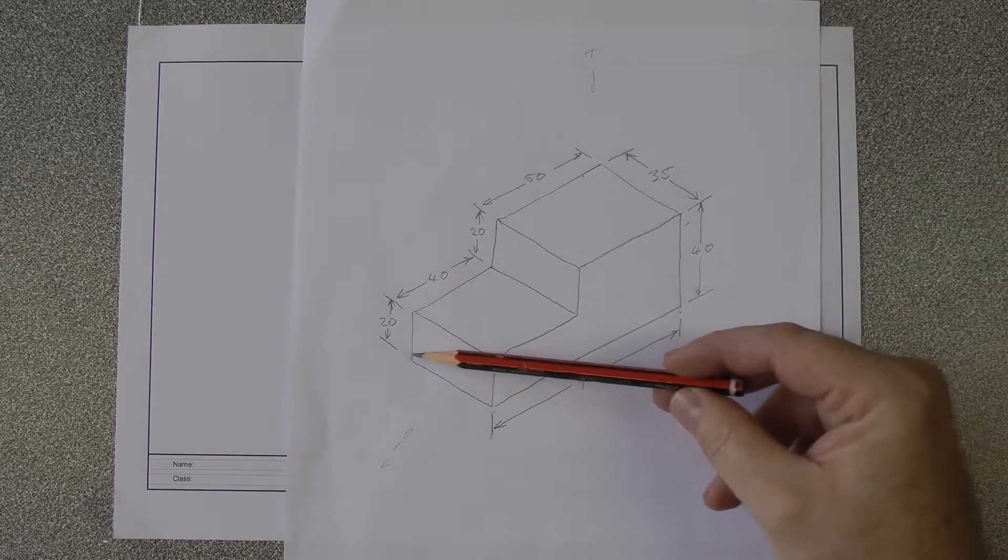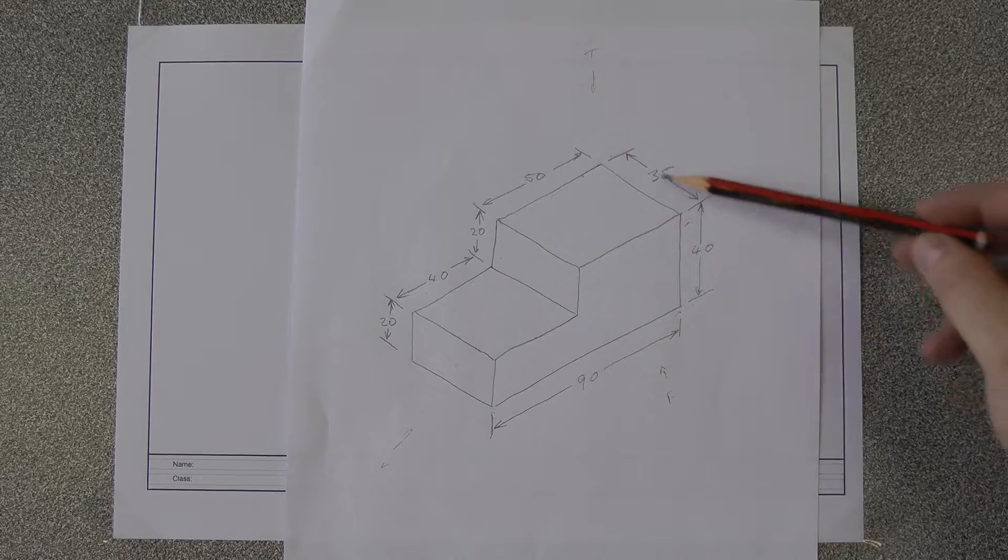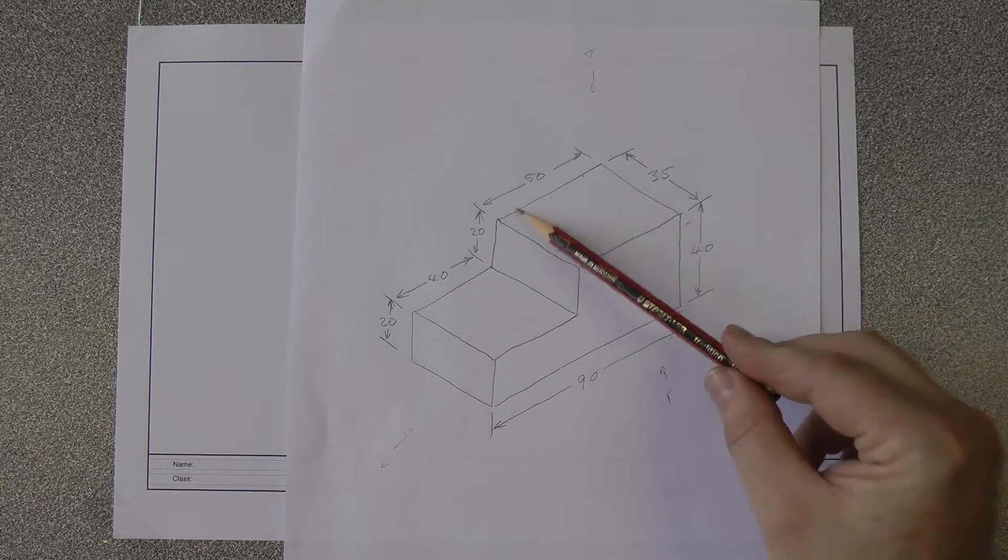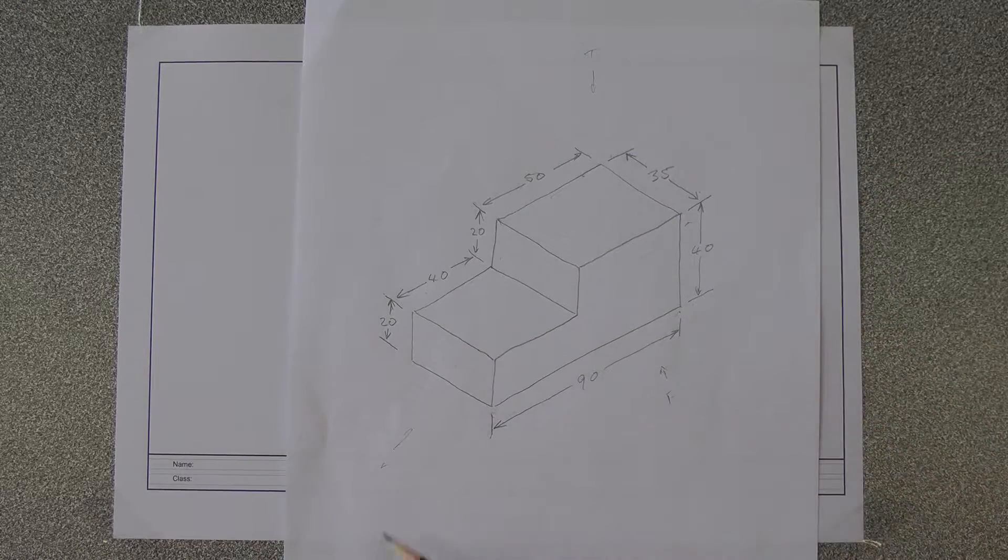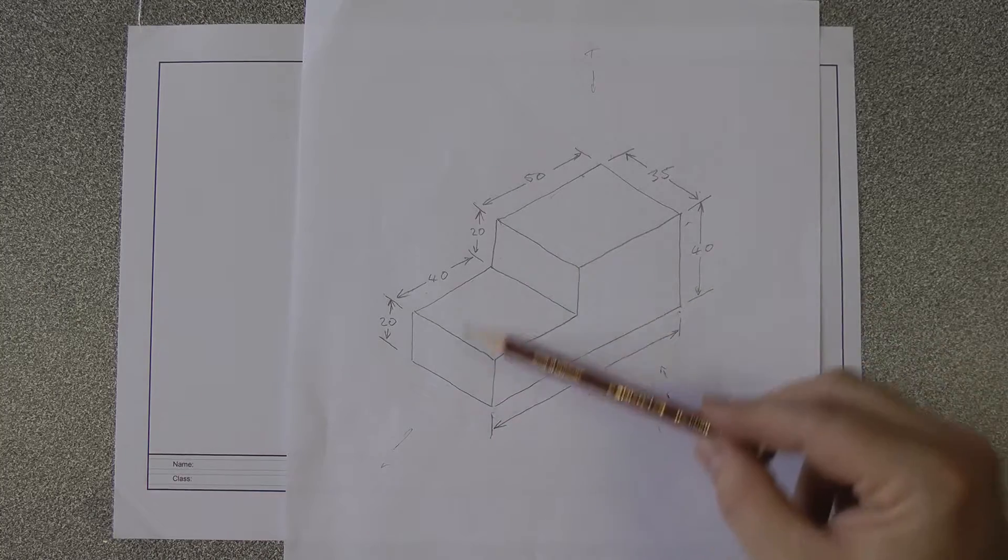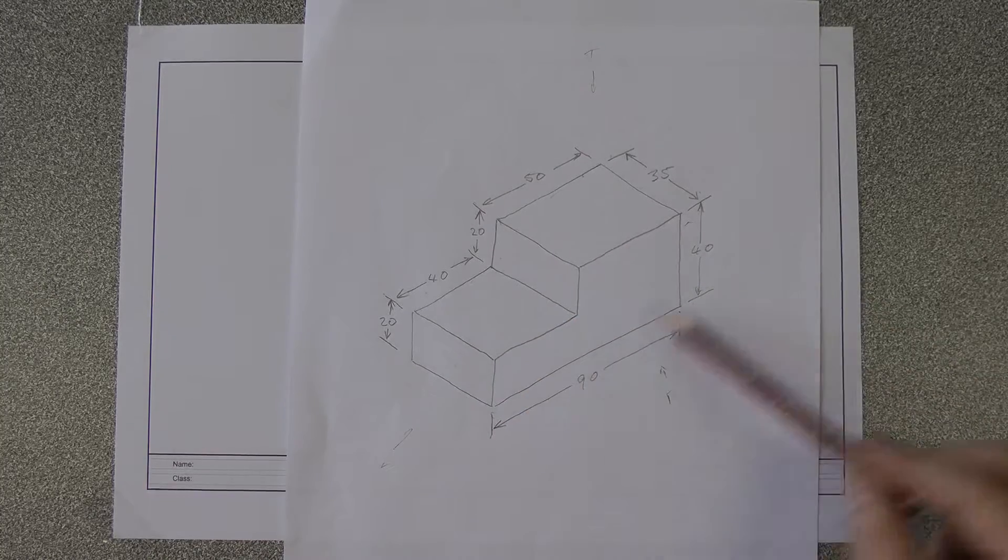Dimensions are going to be as shown here: overall 90 by 40 by 35. This top is 50 across here and 40 below. These two faces are 20 millimeters high each, so this is in the center of the height.